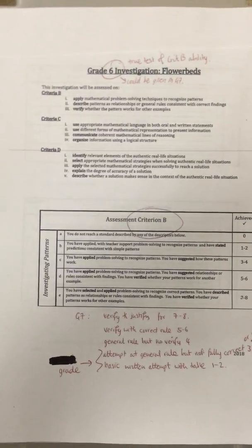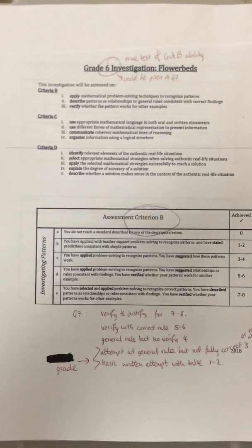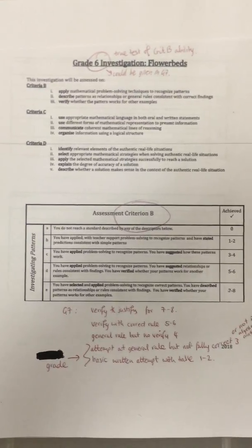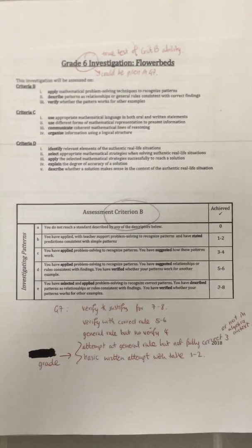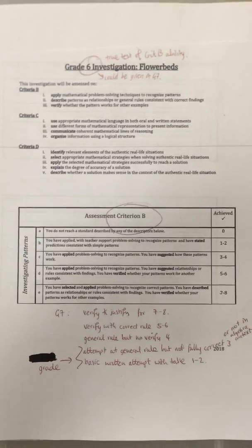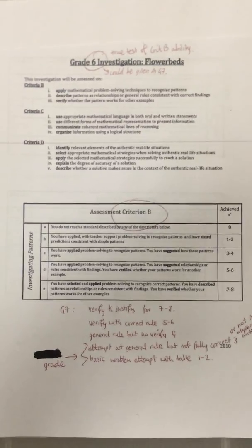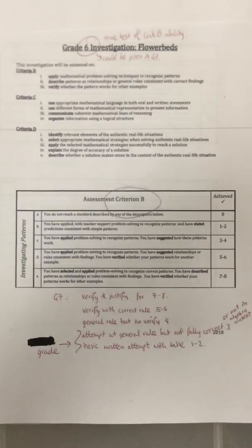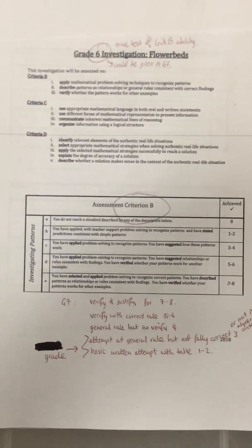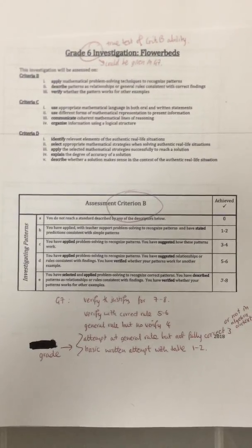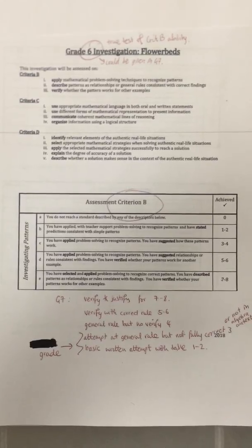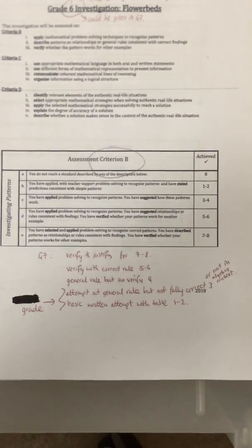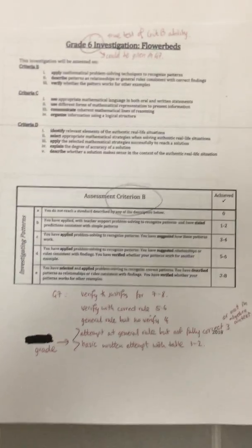Here is your classic criteria B for grade 6 in mathematics, related to linear sequences. All grade 6 and grade 7, maybe even grade 8, will be given a linear pattern to spot at some point in their criteria B.